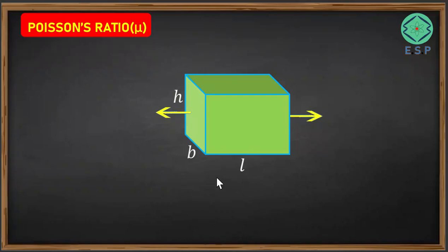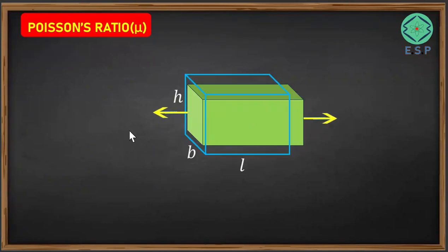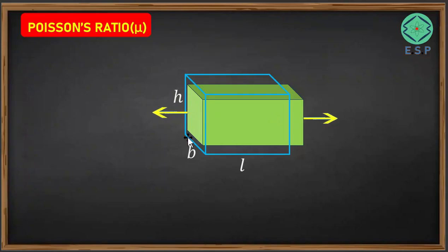Suppose we have a member having length L, breadth B, and height H, and this member is subjected to a tensile load acting along its length. Due to the application of this tensile load, the member is going to elongate along its length. At the same time, the height as well as the width of the member is reducing as the length is increasing.